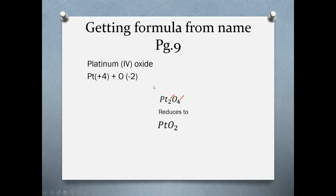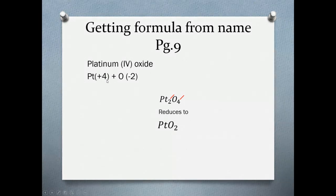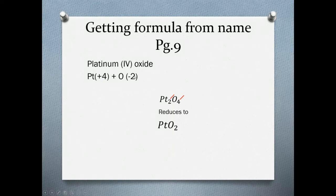Working backwards now, getting the formula from the name. In this case we have platinum four oxide. If it says platinum four, that's automatically telling us we're using the one that has the charge with the number four. Platinum being a cation has a positive four charge. Oxide carries a negative two charge. We do our crisscross. The four from the platinum comes down to the oxygen, the two from the oxygen comes over to the platinum. We'd write it Pt2O4, but reduce to lowest common denominator to get PtO2 as a final formula.